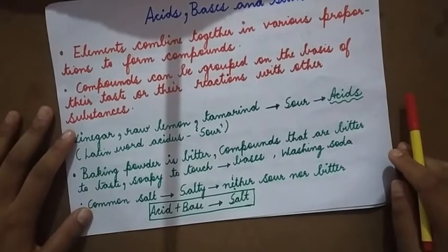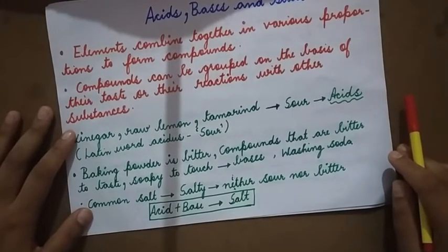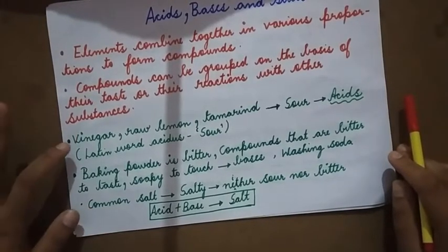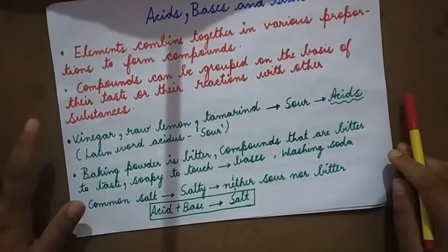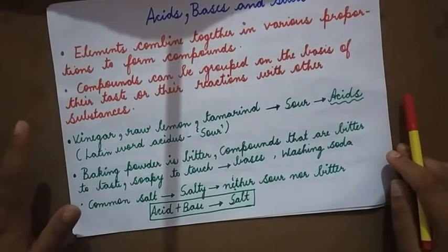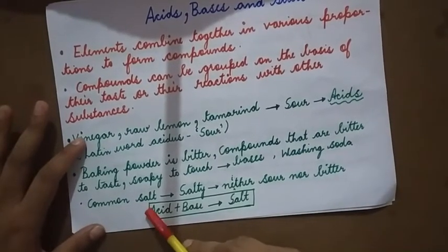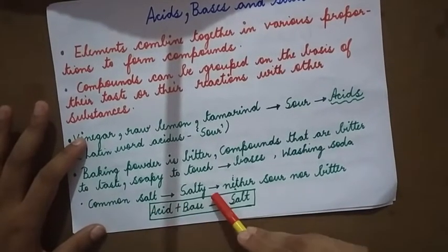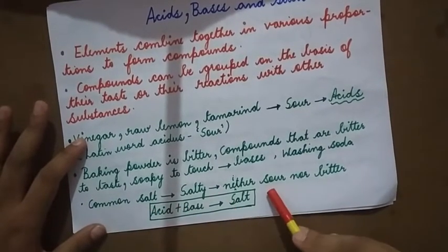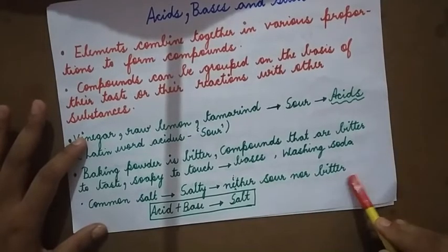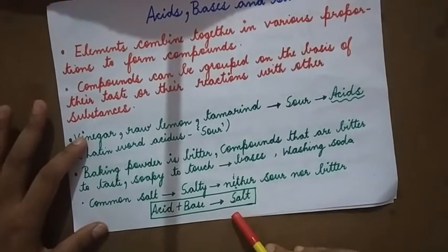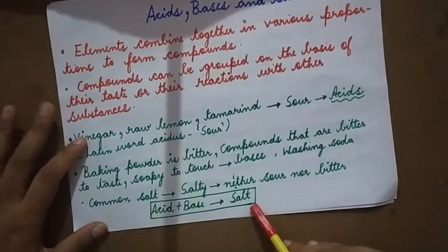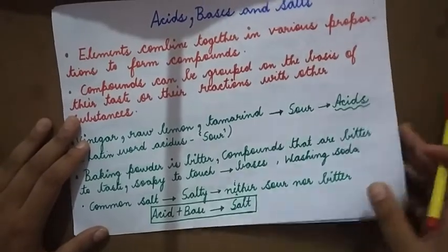For example, neem leaves are bitter, and bitter gourd is bitter. So they all come under bases, and they are also soapy to touch. Common salt is salty — it is neither sour nor bitter. When acid and base combine, they give rise to salt.